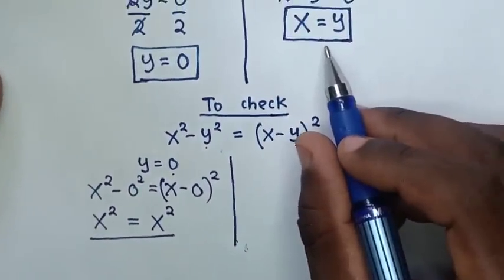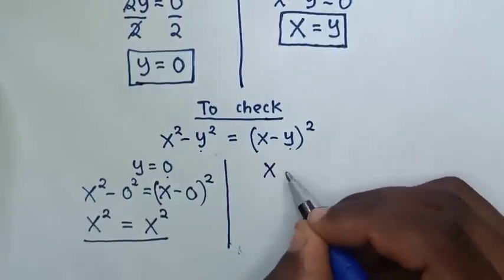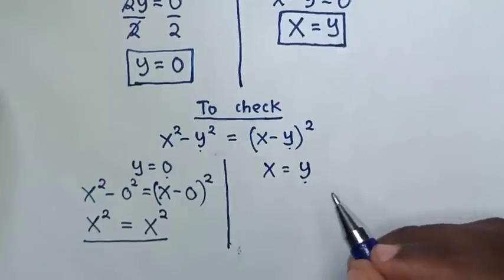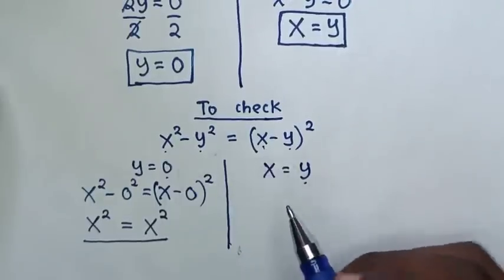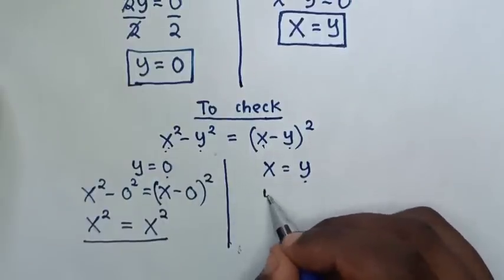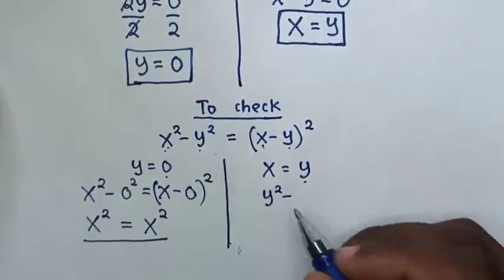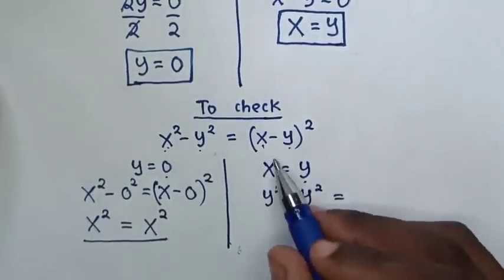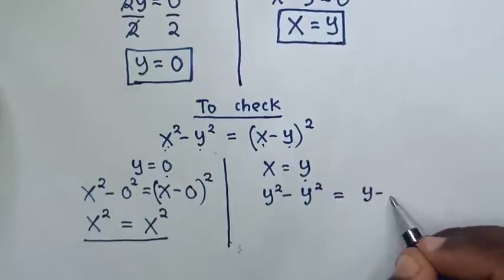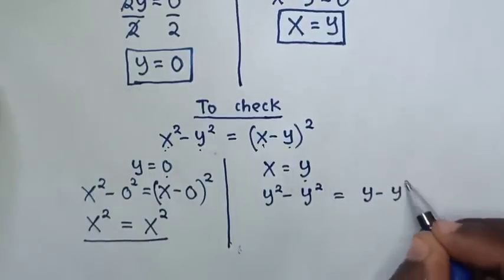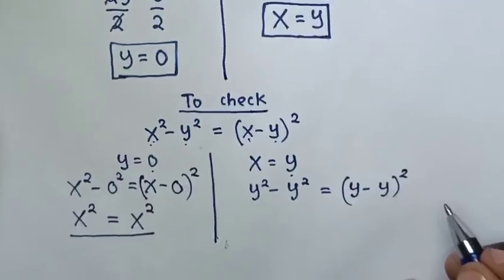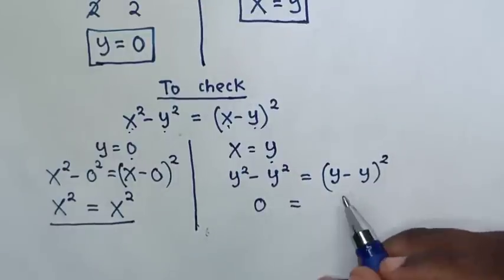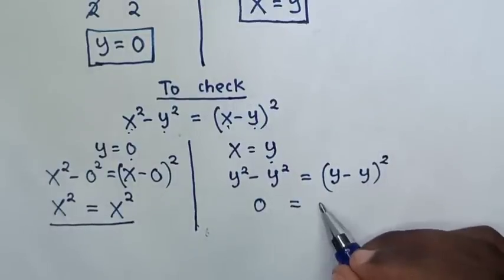Now, to check for x equal to y, we substitute the value of x, which is y, into the equation. Our equation will be y squared minus y squared is equal to y minus y, then bracket squared. So this minus this is 0, equal to y minus y, which is 0.